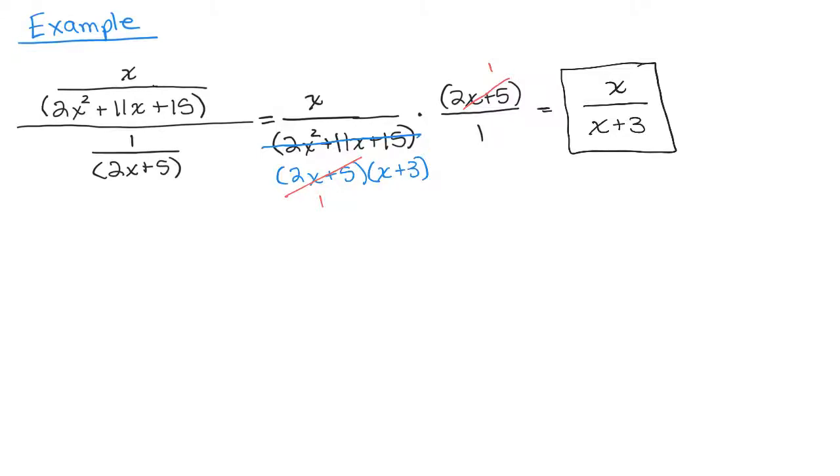Now, let's do the second method. So here's my original problem: X over 2X squared plus 11X plus 15 over 1 over 2X plus 5.